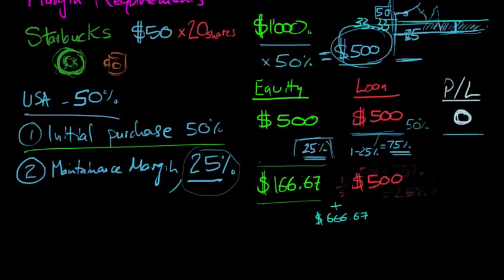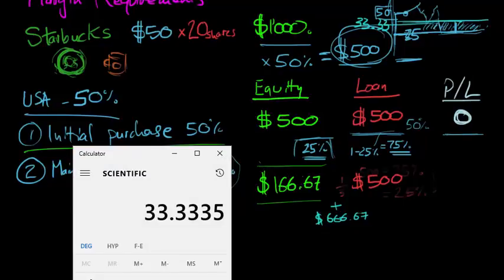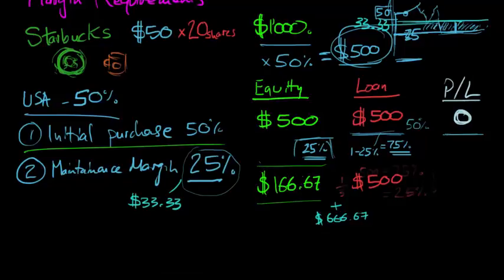So the minimum price we'll be allowed to decline to will be $33.33 from $50, representing a loss of a third of the value of the position. So the maximum you're allowed to lose, if you've got the maximum margin, the 50% margin, is one third of the value of the position before you have to add more maintenance margin.